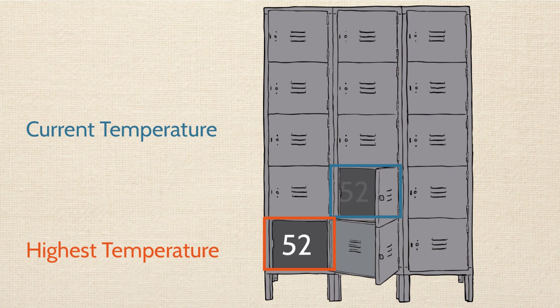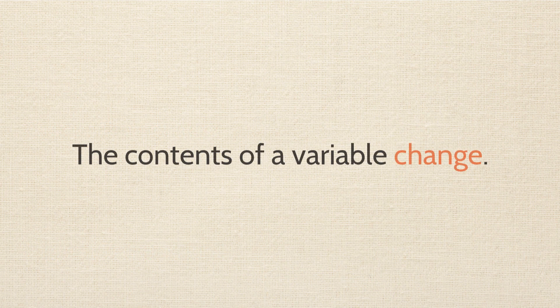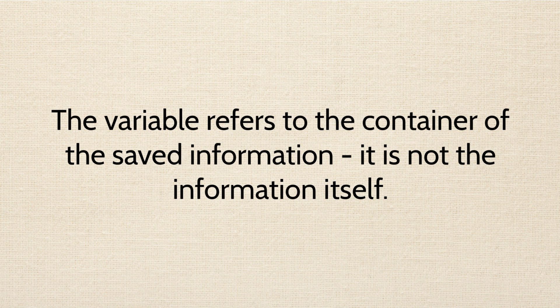I just repeat that process every hour: open up the current temperature locker, replace the old value with the new value, then check to see if I need to update the highest temperature locker. This reveals the most important and powerful thing about variables: the contents of a variable change. The name of the variable stays the same, because the variable is the container for the information — we don't want to confuse it with the actual information itself. The variable is the locker; it's not the stuff that's inside the locker.